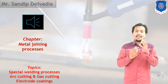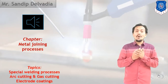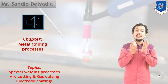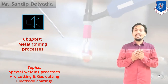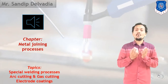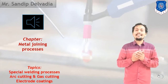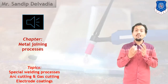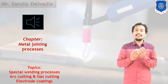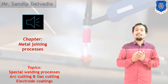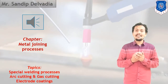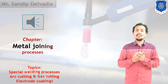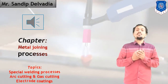So in the Welding Process, our purpose is to join two plates together. In the Welding Process, heat is generated, which can be utilized for joining of two metals or two plates. There are few processes which can be categorized under Special Welding Processes.